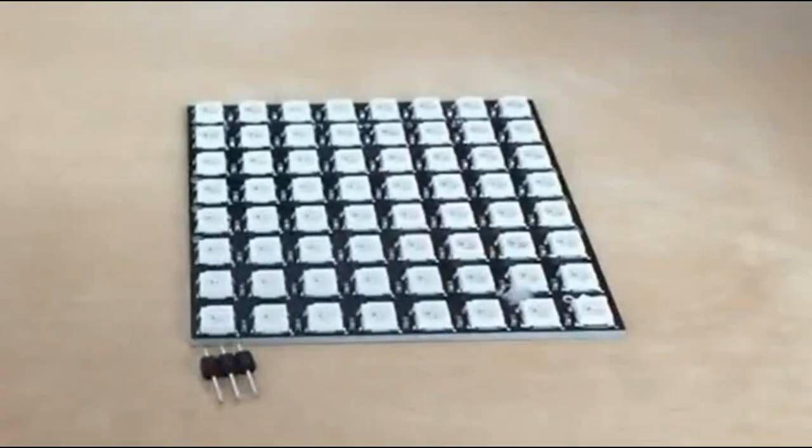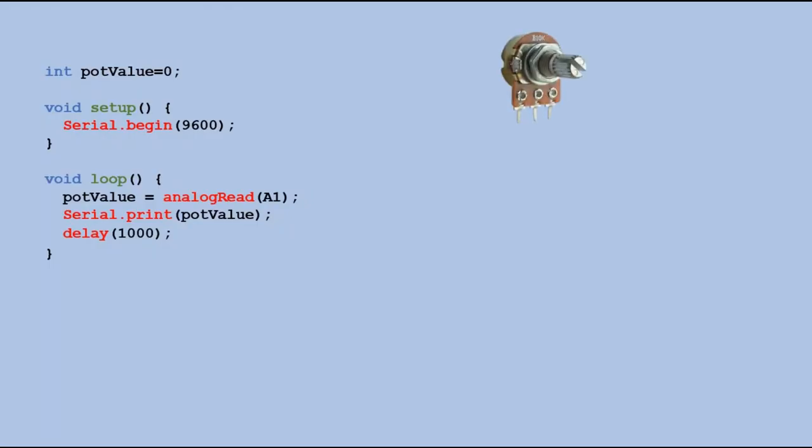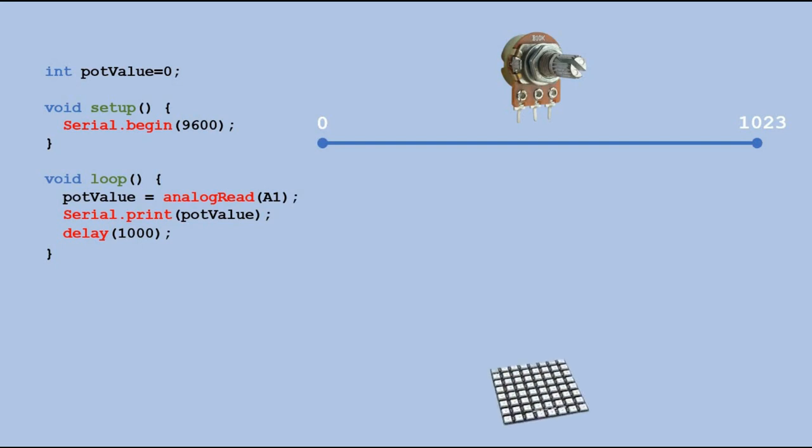I would like to control with a pot which LED of this 8x8 matrix would lit. So potentiometer gives us the range of 0 to 1023. But this is not the range we need. We need 0 to 63.